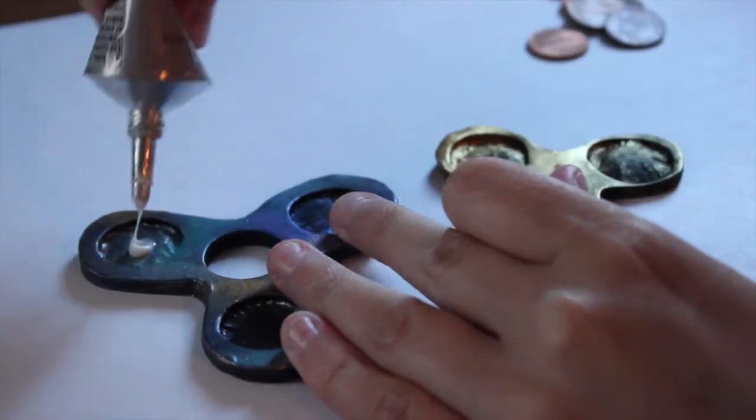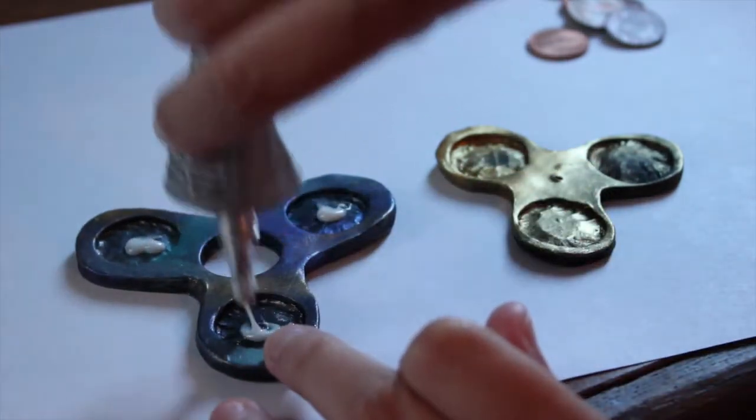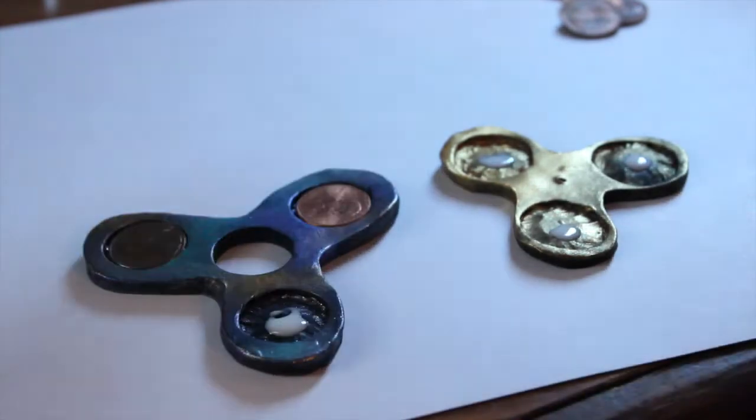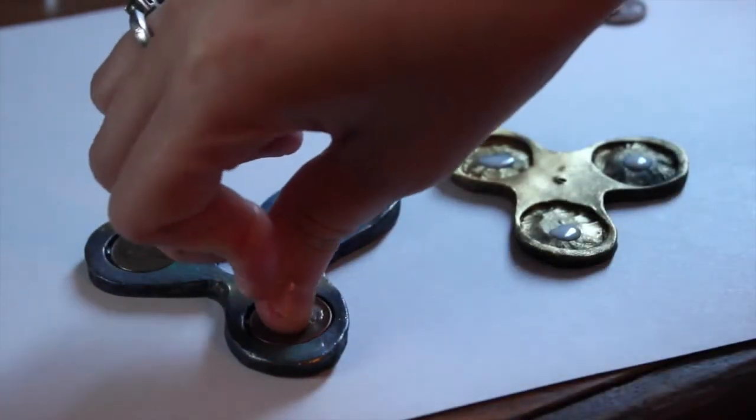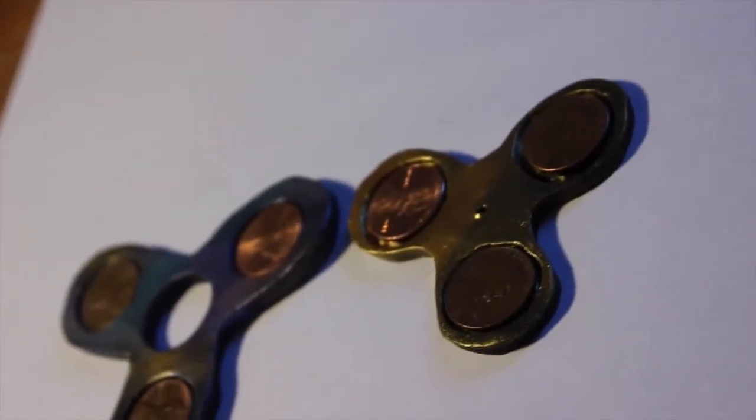Once they're baked and they're hard, you're gonna want to take your super glue and put a little dab into the little holes. You're gonna want to put your pennies, your magnets, your weights - whatever you have - in those spaces. Just make sure you cut them so they're big enough. Now you should let those dry.